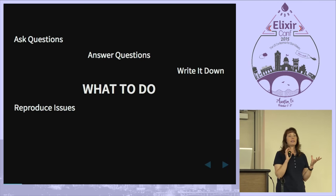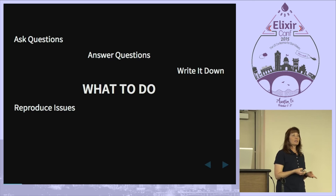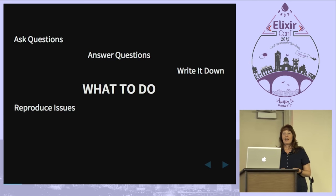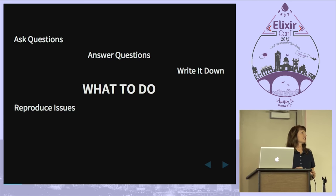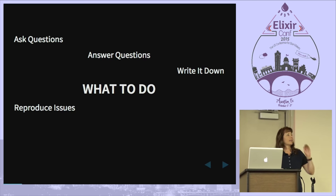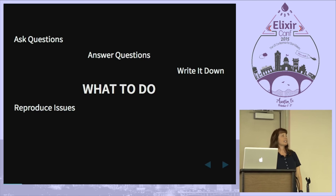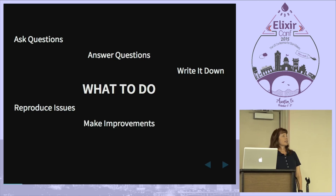Another really fun thing to do is reproduce issues. If you're on IRC or Slack or on the mailing list and someone else posts a problem, you can try to reproduce it. Debugging other people's code is really useful — if you can take a small snippet of a problem that may not even be that well described and figure out what's wrong, you can definitely use that skill later. Maybe it's just a typo and you can help get that person past their issue; they just needed another set of eyes on it.